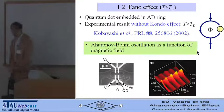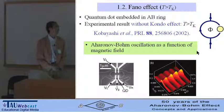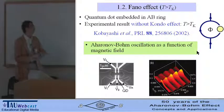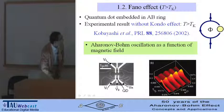What happens when the quantum dot is embedded in an Aharonov-Bohm ring? There is an experimental result without Kondo effect by Kobayashi and co-workers. Using this sample, by changing the magnetic field, they observed the Aharonov-Bohm oscillation as a function of the magnetic field.